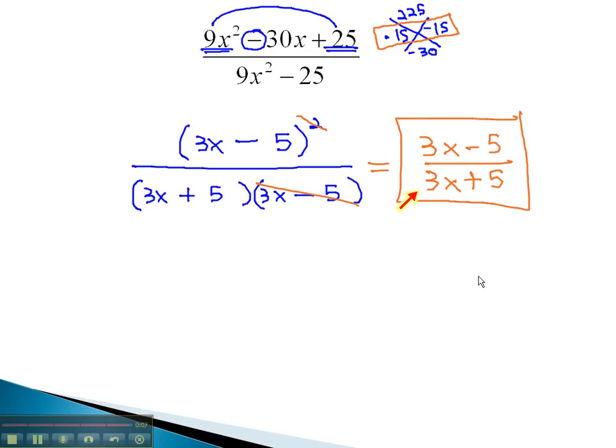We cannot reduce the 3's and 5's as a result of the addition and subtraction. This is completely simplified by factoring.